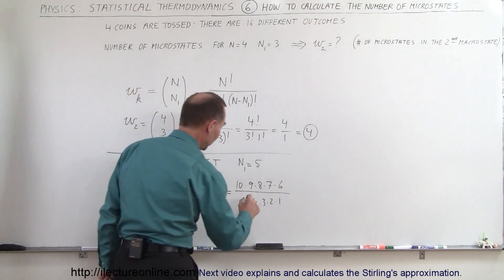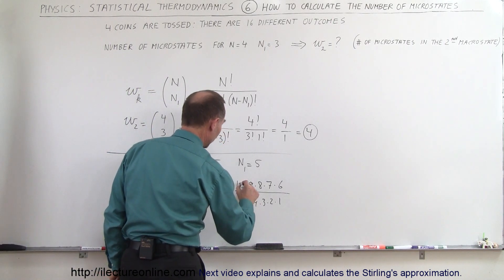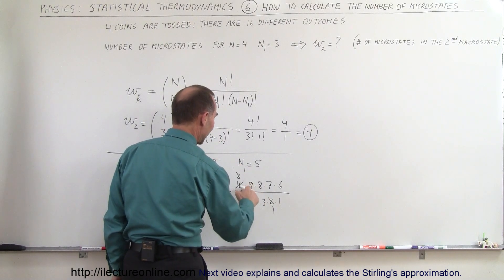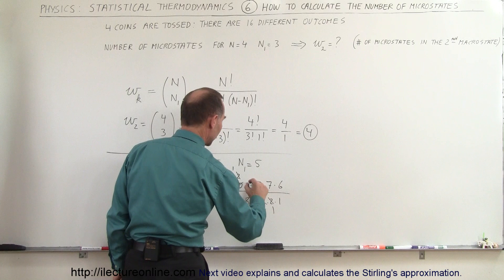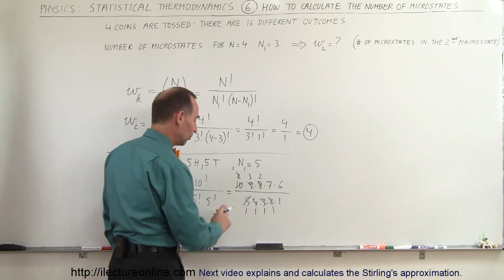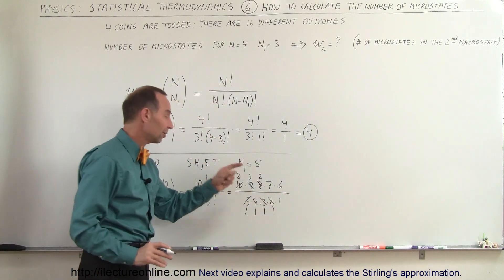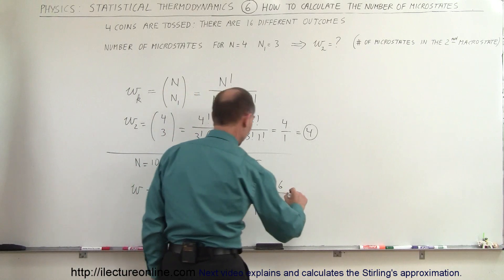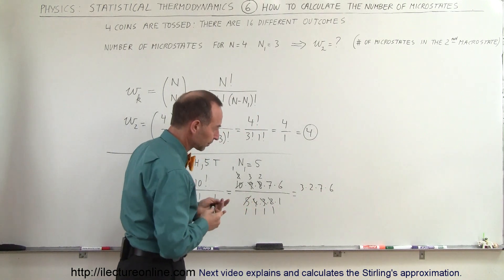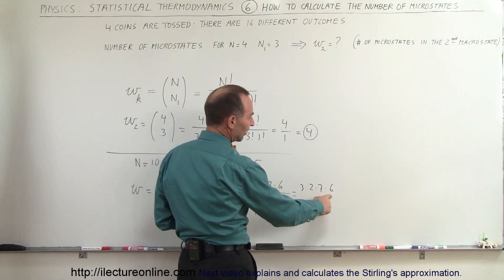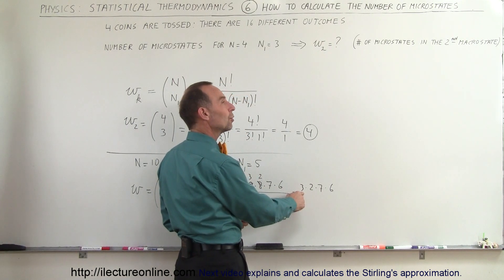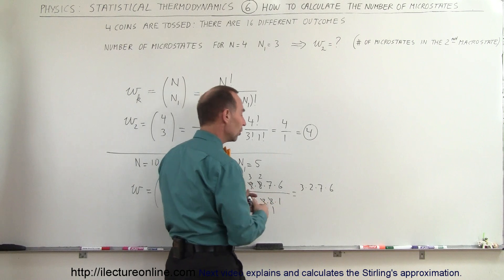Now we can simplify. The 5 in the denominator goes into 10 to give 2; the 2 cancels with the 2 in the denominator giving 1; the 3 goes into 9 three times; the 4 goes into 8 two times; leaving 1s in the denominator. We then multiply what remains in the numerator: 3 times 2 times 7 times 6. That gives 7 times 6 = 42, times 2 = 84, times 3 = 252.